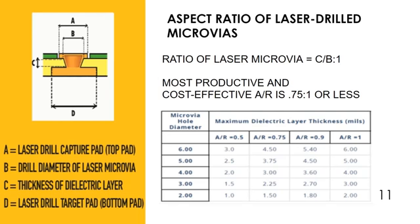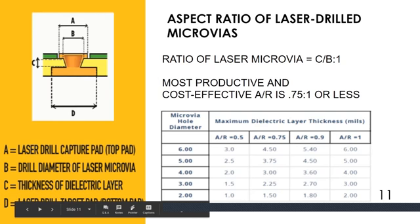But the optimum results are obtained at 0.75:1. Why? Because otherwise there will be issues with connectivity — like plating voids and other issues. It is not about laser capability; it is everything with respect to the plating. And also if there is filling — copper fill — you get good filling results when it is 0.75. So normally it is better to use a 4 mil drill with 3 mil length of dielectric, with an aspect ratio of 0.75.